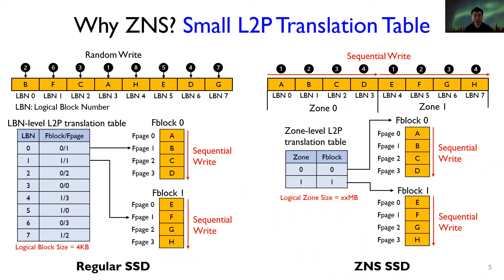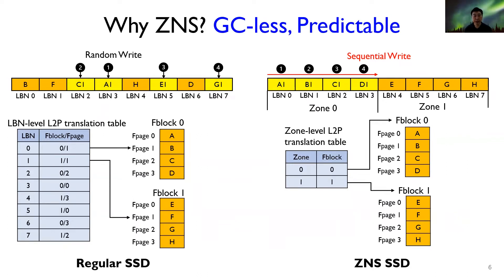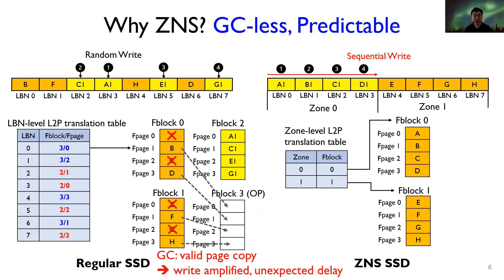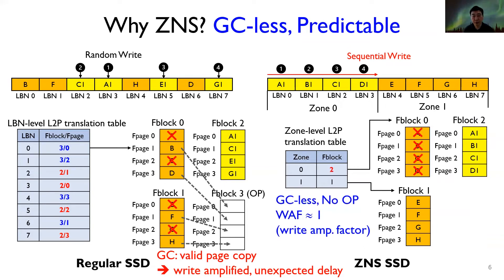Regular SSD uses a logical block-level address translation table because the address space can be accessed by random write. But ZNS SSD can maintain a zone-level L2P translation table because each zone is sequentially written. The coarse-grained mapping requires a small internal DRAM. In addition, regular SSD requires garbage collection where many flash pages are invalidated randomly, which amplifies write operations and causes unexpected delays. Because the mapped flash blocks of a zone will be fully invalidated at a zone reset, garbage collection is not required, over-provisioned space for GC is unnecessary, and write amplification by garbage collection can be eliminated.